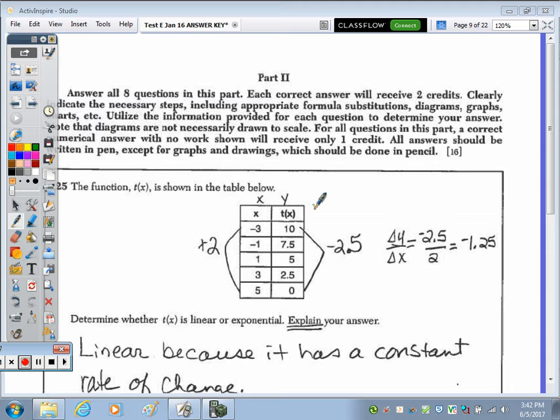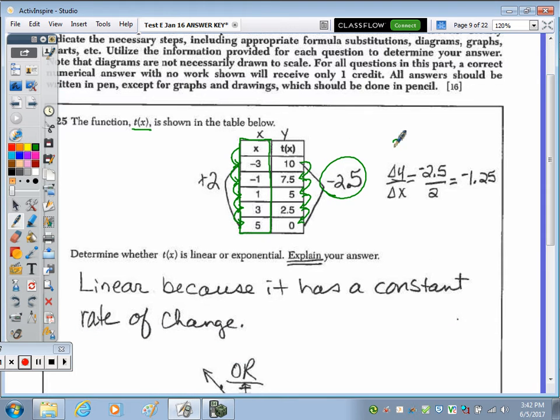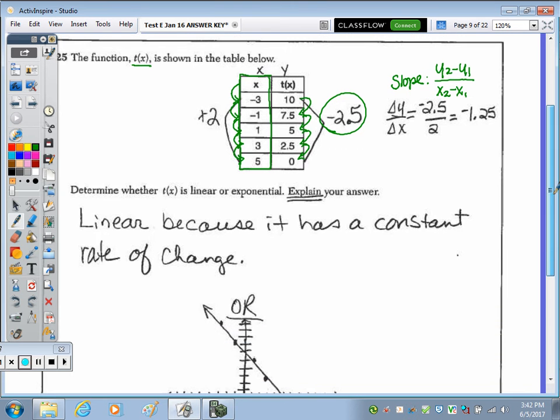So given this function T(X) in the form of a table, if we look at the X column, we do not see any X values repeating, so therefore we know it's a function. Determine whether T(X) is linear or exponential. Well, since we move from one X value to the next by adding two, and we also move from each Y value by subtracting two and a half, that is a constant rate of change. You can see the slope calculation or rate of change here: change of Y over change of X, or Y2 minus Y1 over X2 minus X1. Because of the constant rate of change, it's linear.